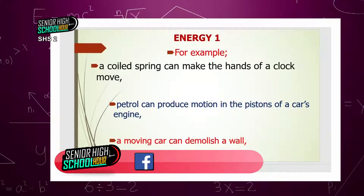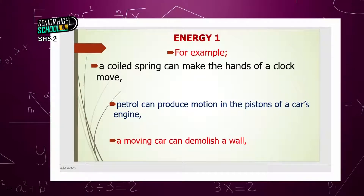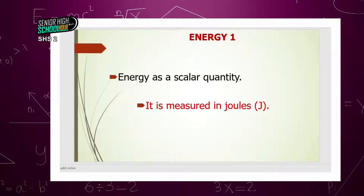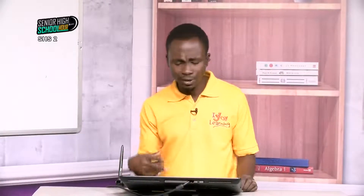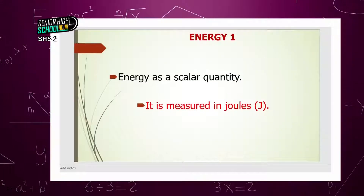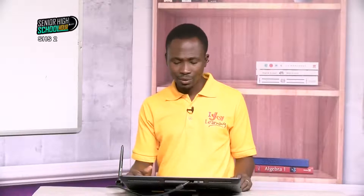A moving car can demolish a wall — if a car runs into a wall, the wall collapses. Energy is involved there. Energy is a scalar quantity, meaning we can measure it but we cannot tell the direction in which it acts. Scalar quantities have magnitude but no direction. Energy is measured in joules — we can have 10 joules, 5 joules, 1 joule of energy.